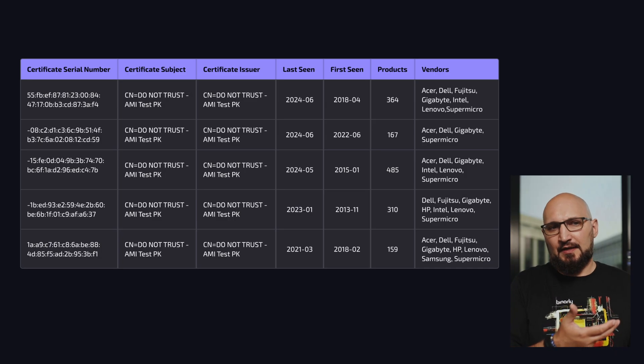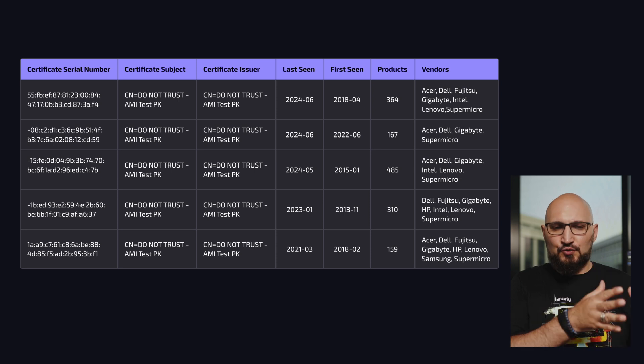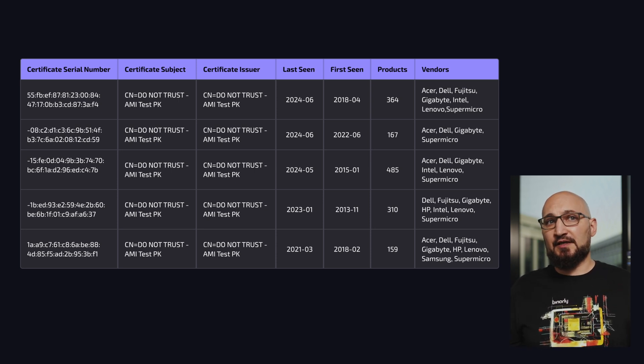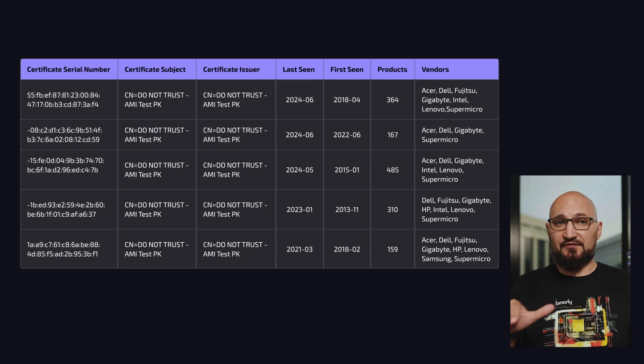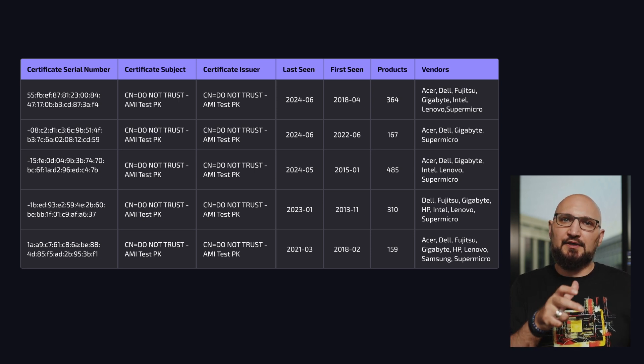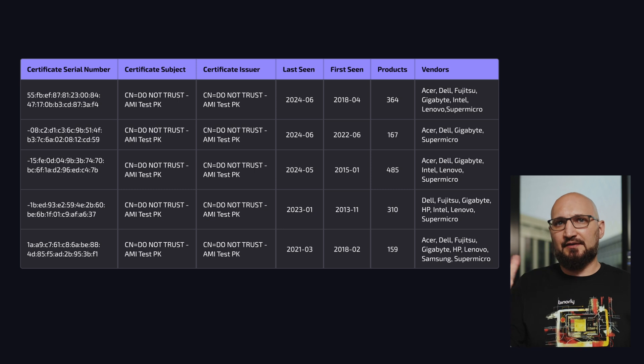What really should have happened is this key should not be used across multiple layers of the software supply chain for different vendors. It should be uniquely generated per vendor, per product line, and that would help reduce the impact. The binary team is always focused on discovering software supply chain failures, and this is not the first incident we've been involved in.